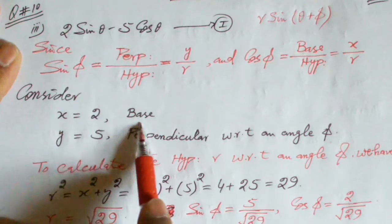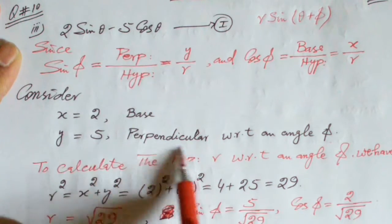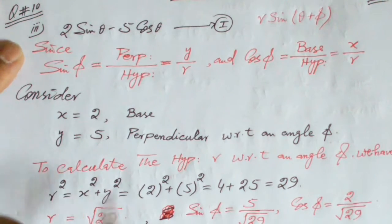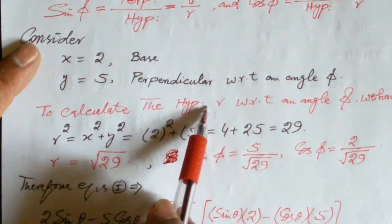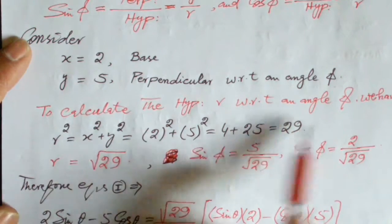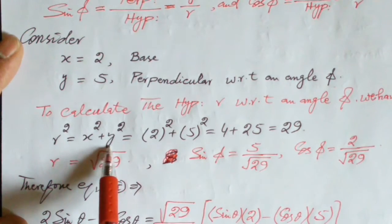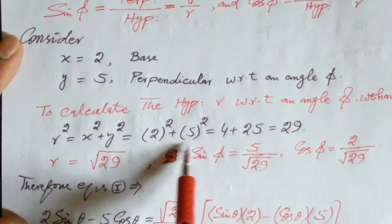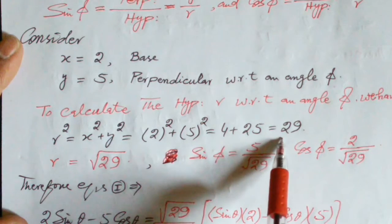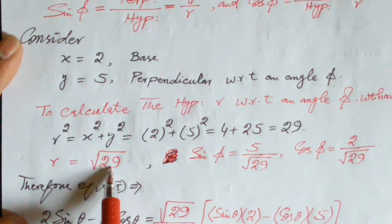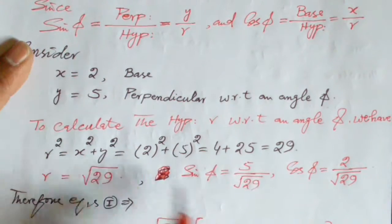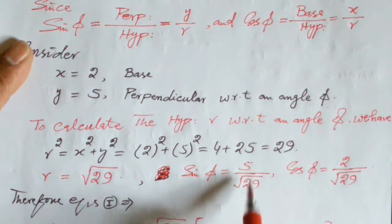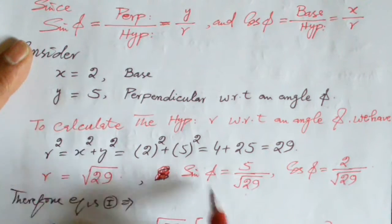Consider 2 is the base and 5 is the perpendicular. To calculate the hypotenuse r, we apply the Pythagorean theorem: r² = x² + y² = 2² + 5² = 4 + 25 = 29, so r = √29. To calculate sin(φ), which equals y divided by r, y is 5 and r is √29.